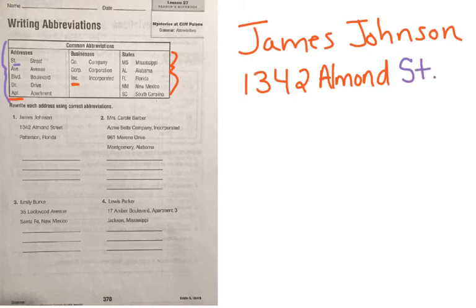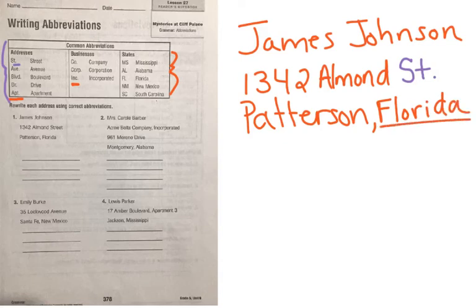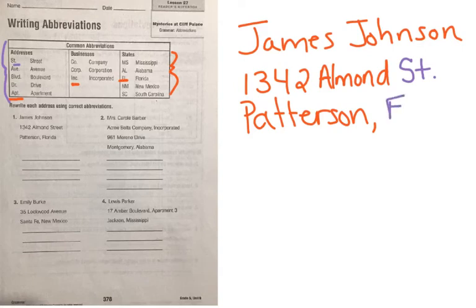The next line is Patterson, Florida. We're going to write Patterson, and then we look at our list because we know Florida can be abbreviated. To abbreviate Florida, it's capital F, capital L — with no period after it. And that's how you change the address.